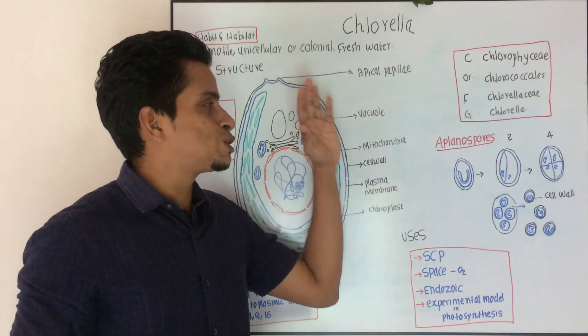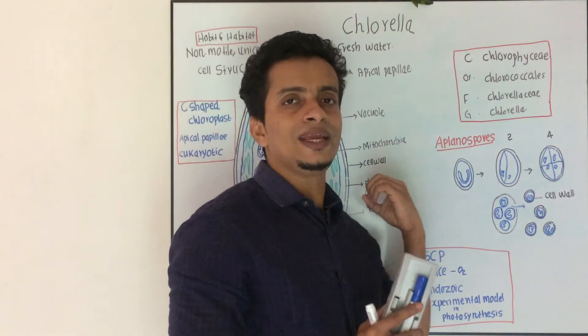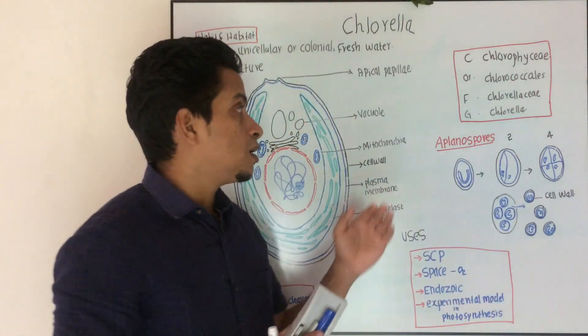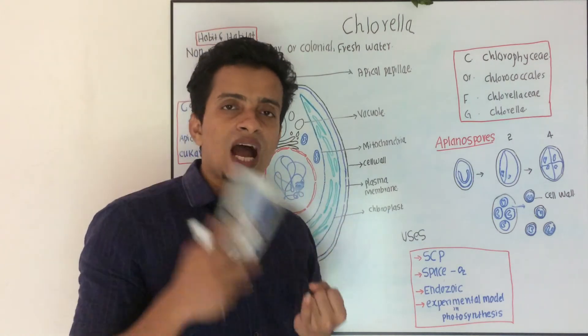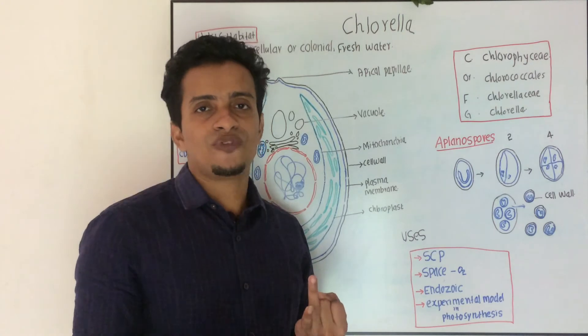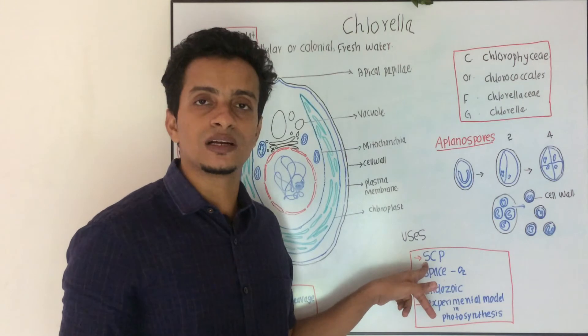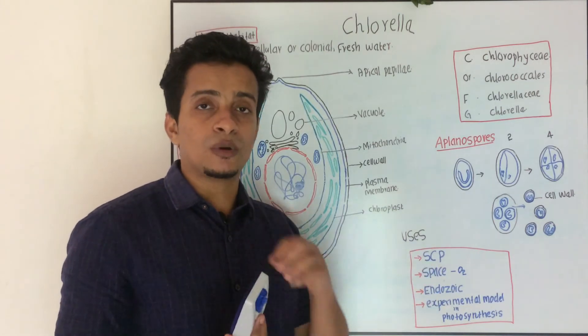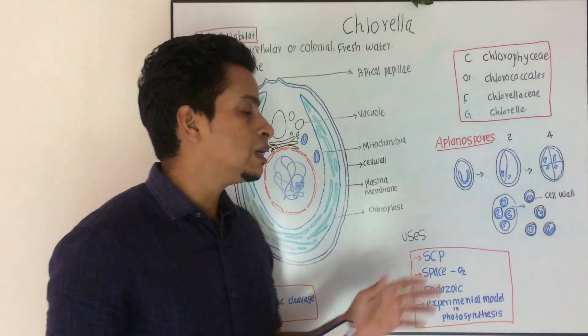Next, the uses of Chlorella. It is rich in protein and fat, so it can be used for single cell protein production, SCP, single cell protein production. We've learned spirulina, that also happens in Chlorella type.